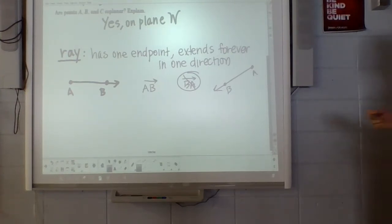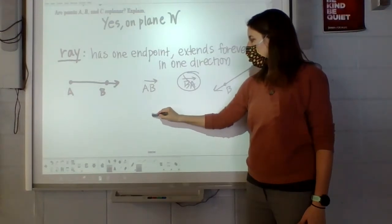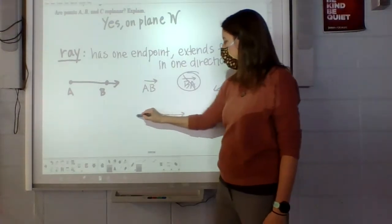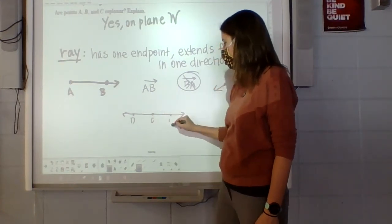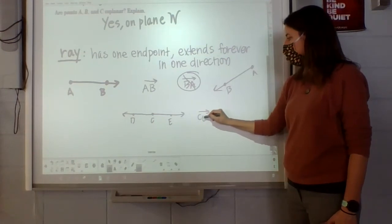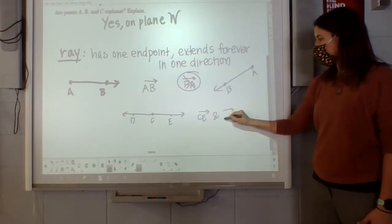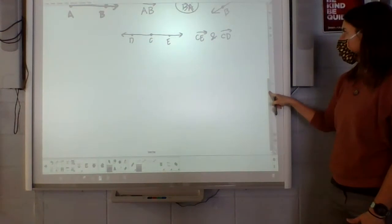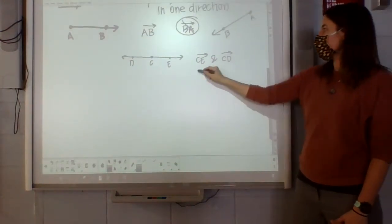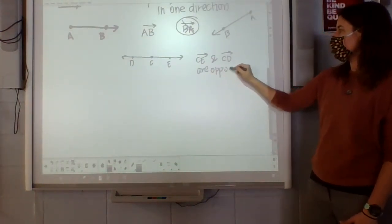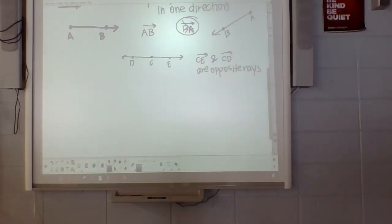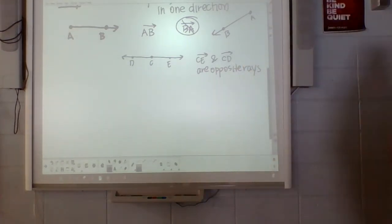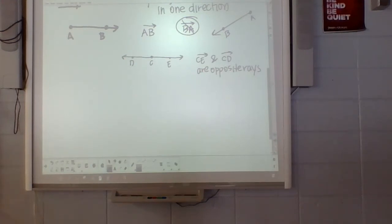So a ray has one endpoint and extends forever in one direction. There's also something called opposite rays, which basically goes opposite, exactly what it sounds like. So CE and CD are opposite rays.